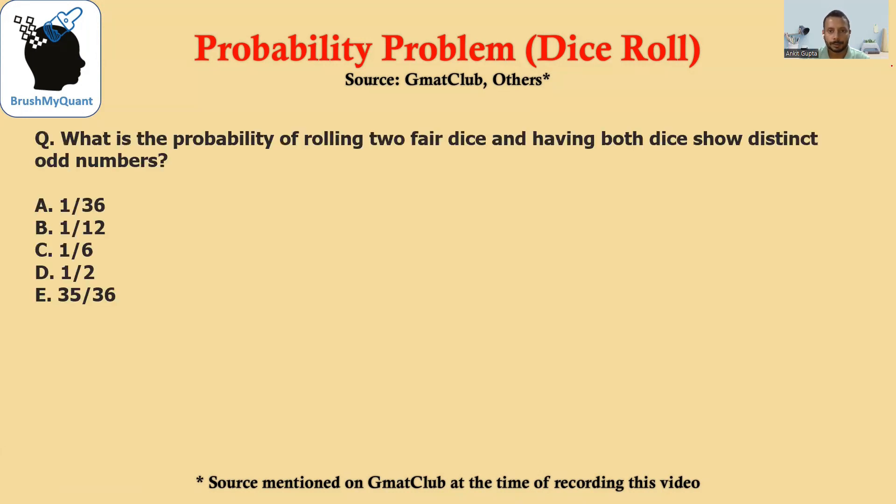Hi. We'll be solving a probability problem today. What is the probability of rolling two fair dice and having both dice show distinct odd numbers?